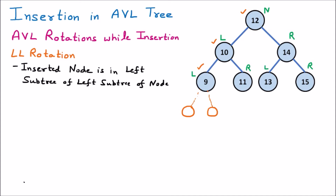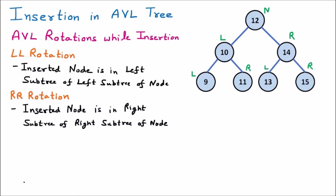The next type is RR rotation. RR means right-of-right — the inserted node is in the right subtree of the right subtree of a node. If we insert a node at the right subtree of the right subtree — at this position or this position — this is a right-of-right insertion. If the tree becomes unbalanced then RR rotation is applied.